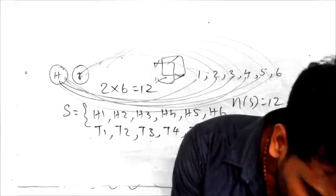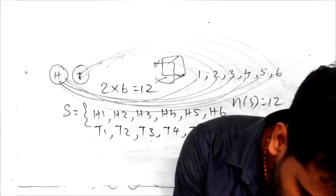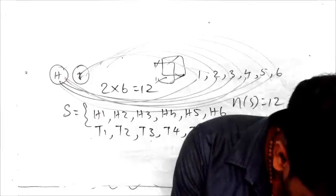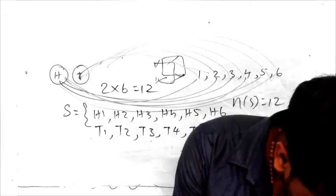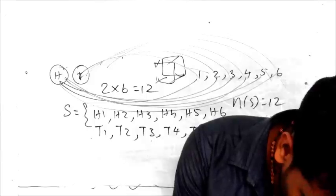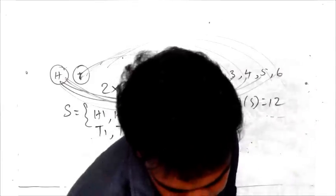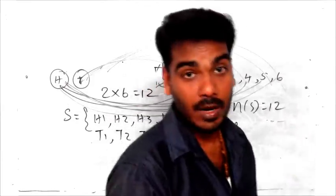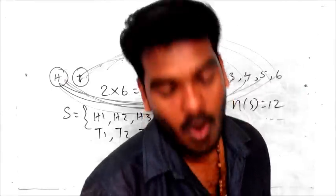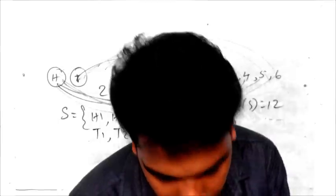The 5th question is: if a coin is tossed and then a die is rolled only in the case the point is shown. That is why we have to take a point. A coin is tossed and then a die is rolled only in case a head is showing on the coin.